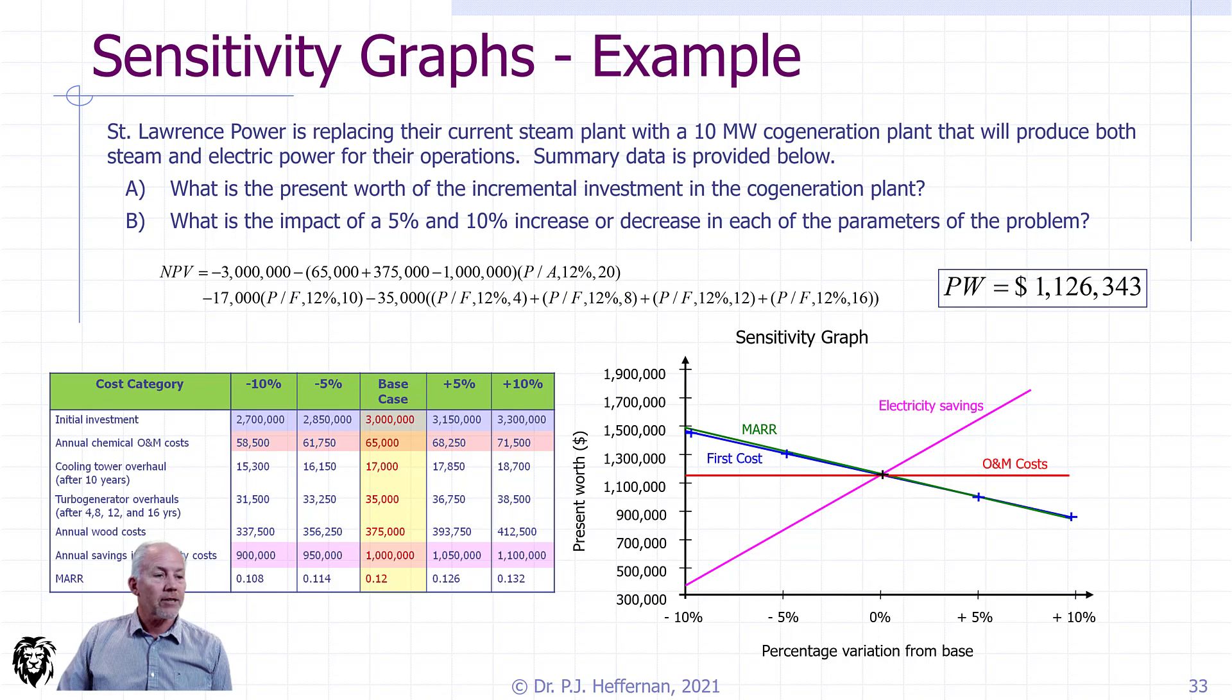On the annual savings in electrical costs, however, we see it as extremely sensitive to our estimates and electrical savings. So if our electrical savings are off, if we are not saving what we hope to save, then we're going to change the viability of our project fairly quickly. And that begs the question, so why or what would make our estimate wrong?